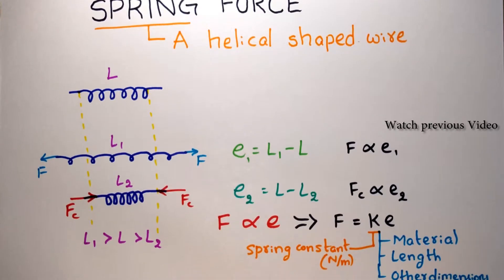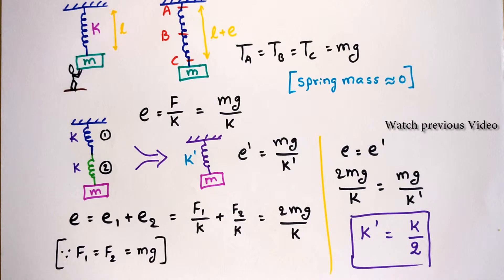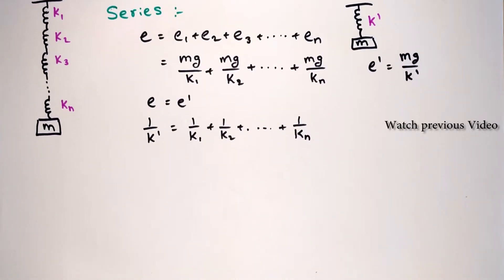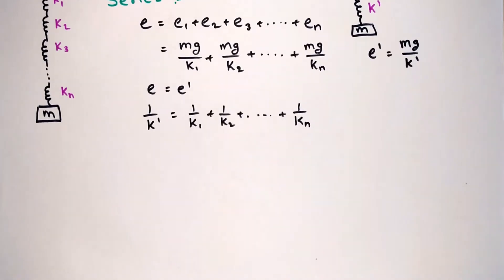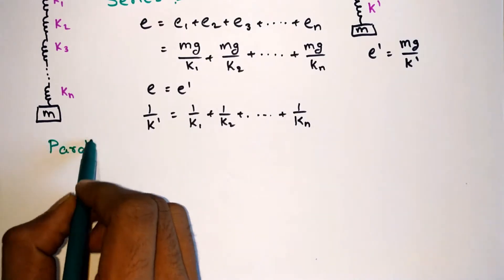Hello guys, in the previous video we discussed Hooke's law and how to find the equivalent spring constant when springs are connected in series. Now in this video we will see how to solve for equivalent spring constant when springs are connected in parallel. So let's begin.